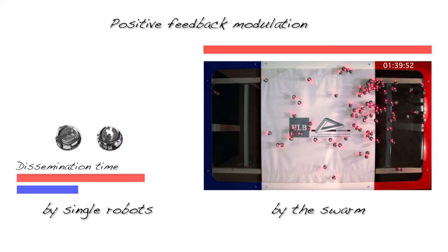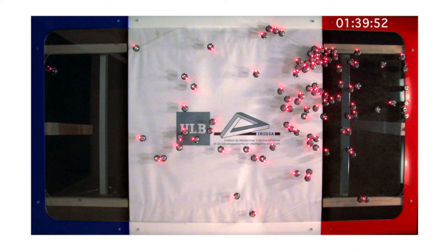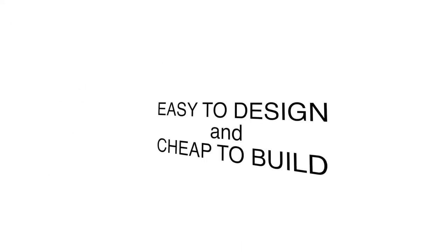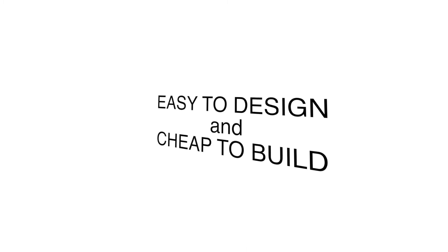Self-organized collective decisions let a swarm overcome the limitations of its individual robots. In this way, swarms of small, incapable and unreliable robots, which are easy to design and cheap to build, can still achieve their collective goals.